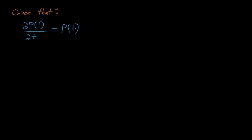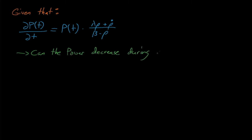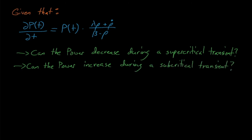This equation leads to some interesting questions, such as: can a reactor's power decrease during a supercritical transient, and can it increase during a subcritical transient? The answer to both is yes. The power can decrease during a supercritical transient if the derivative of the reactivity is negative and exceeds lambda*rho. For example, if an 80-cent reactivity insertion is rapidly decreased to a 20-cent insertion, the system is still supercritical and its power will continue to increase over the long term, but that instantaneous drop in reactivity decreases the multiplication of prompt neutrons, which thus causes the system's power to drop. The magnitude of the reactivity insertion isn't the only thing that matters — the rate of the insertion matters too.